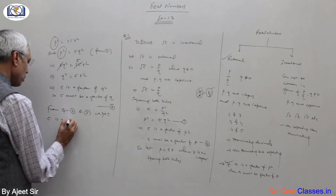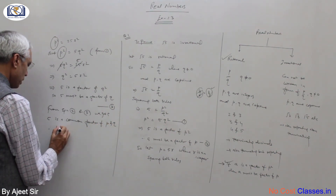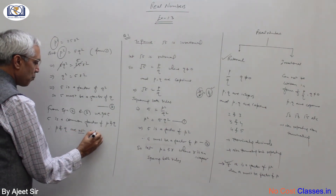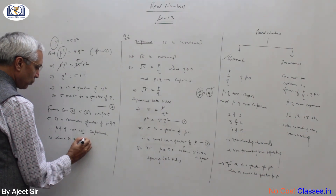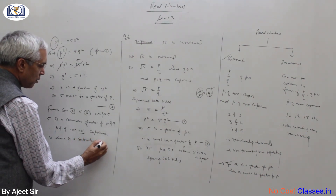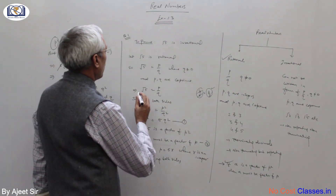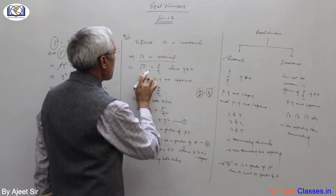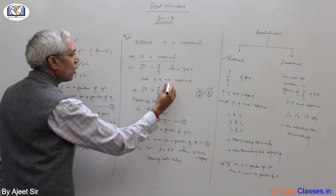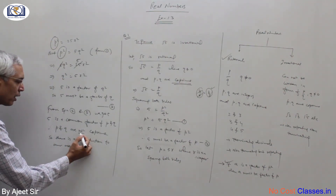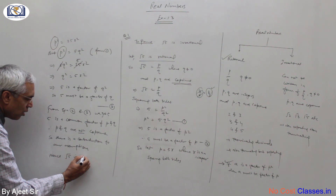So 5 is a common factor of both p and q. Therefore p and q are not co-prime — this is a contradiction to our assumption. Our assumption was that root 5 is rational, but since p and q are not co-prime, our assumption is wrong, and hence root 5 is irrational.